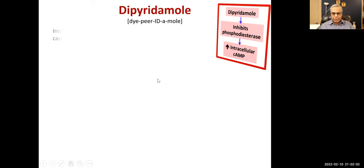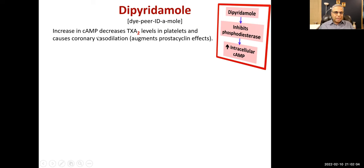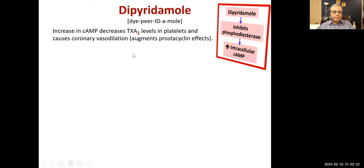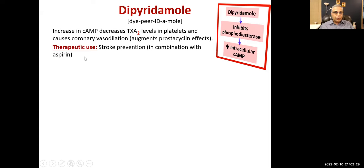Dipyridamol is a vasodilator as well. Increased cyclic AMP decreases thromboxane A2 levels in platelets, causes coronary vasodilation, and augments prostacycline effects — it actually increases the levels of prostacycline. All these effects lead to inhibition of platelet aggregation and vasodilation. Therapeutic use is stroke prevention in combination with aspirin.